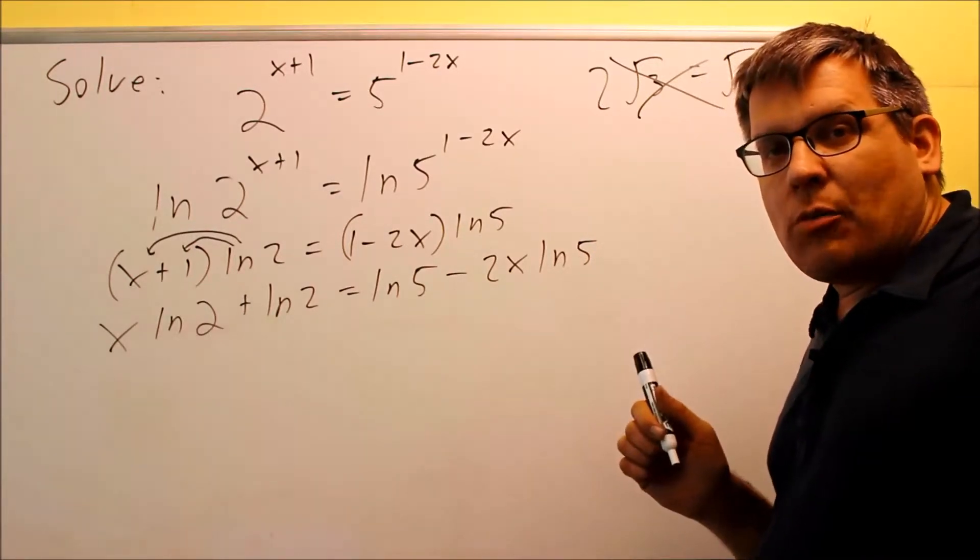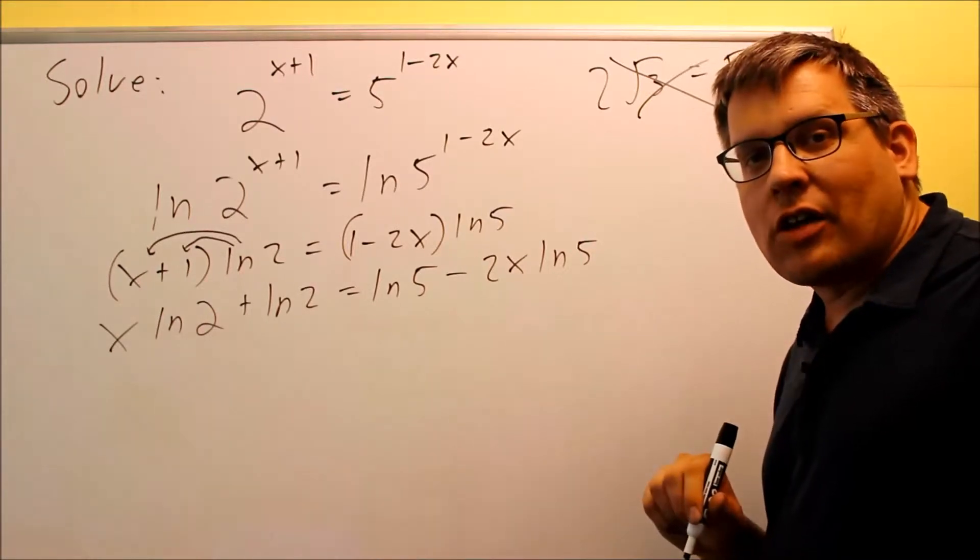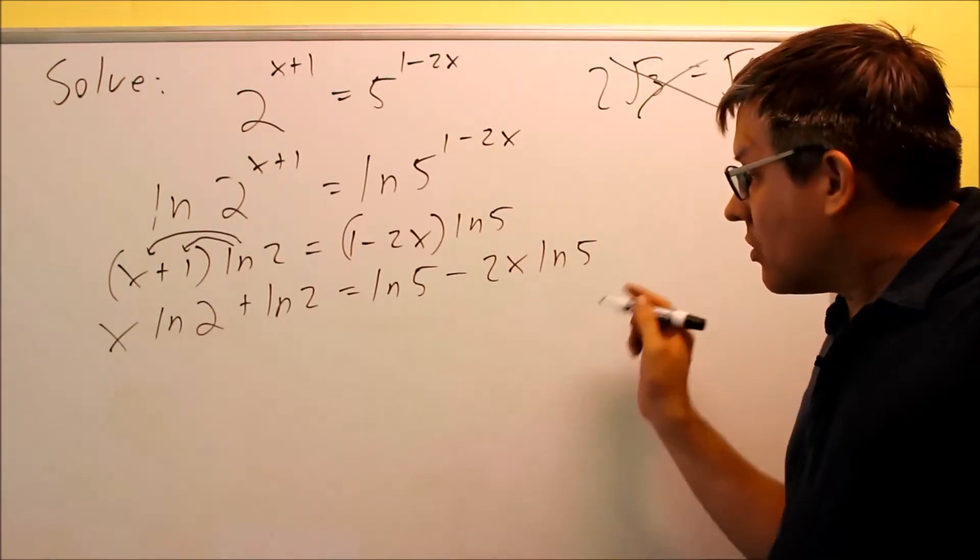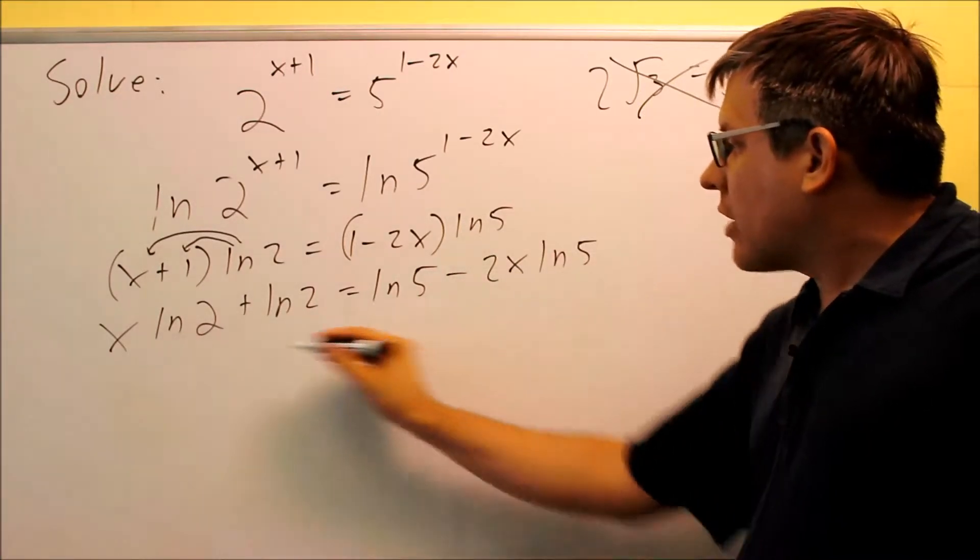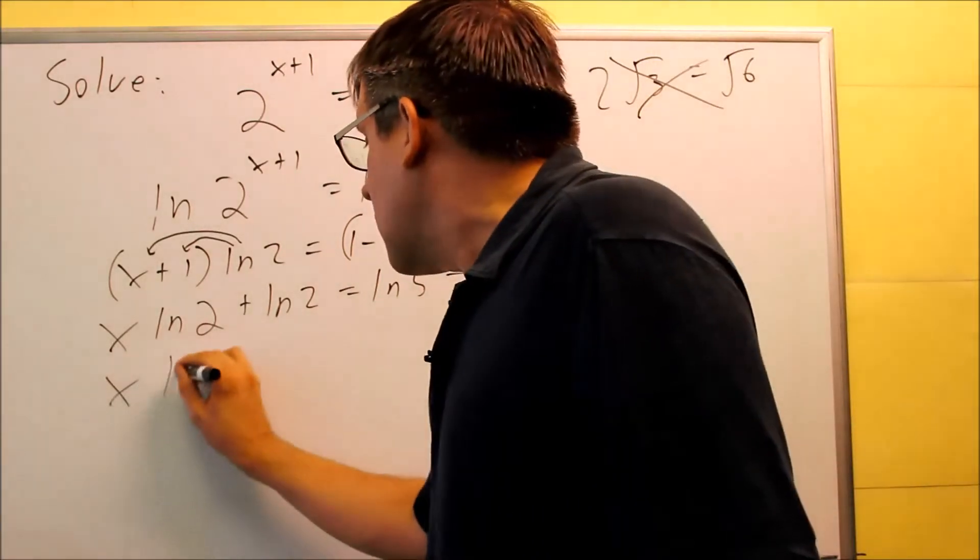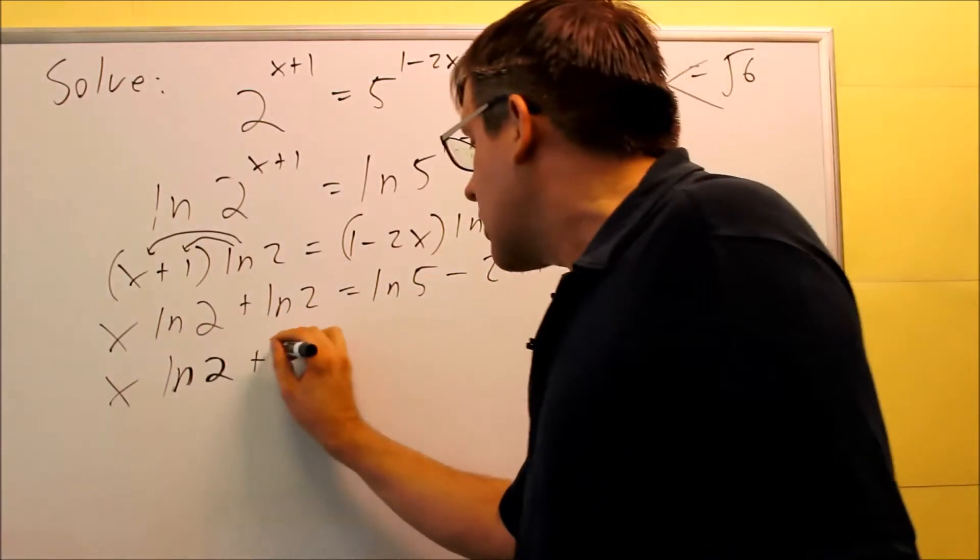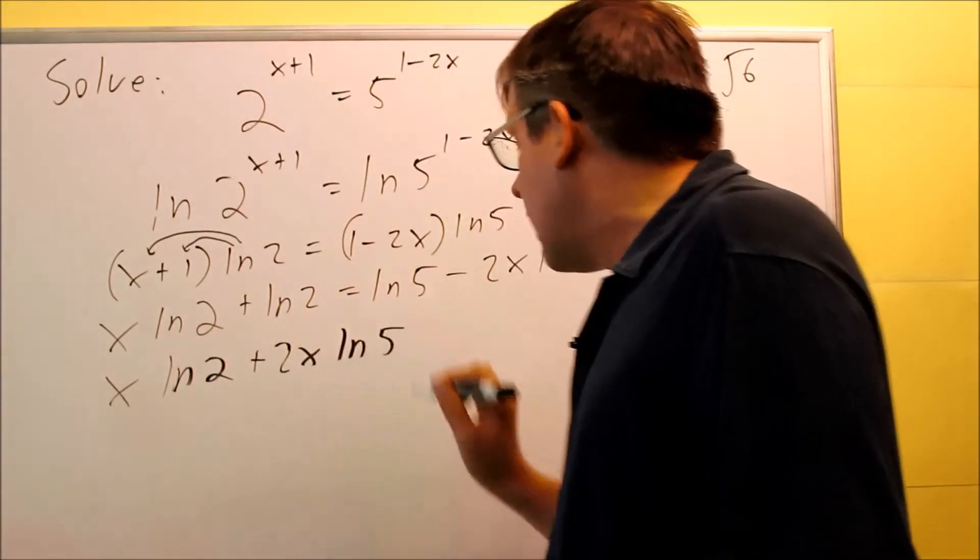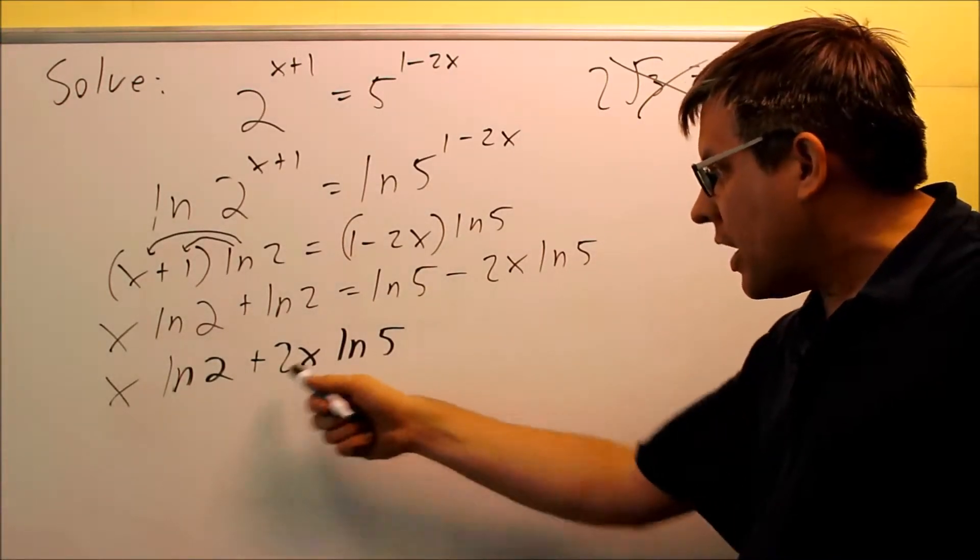What you want to do on this problem is you want to get all the x's on one side of the equation so that way you can factor out the x, divide, and get the answer. I want to bring this term across the equal sign so I have all the x's on one side. x ln 2 plus 2x ln 5.